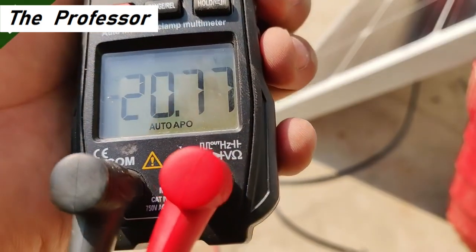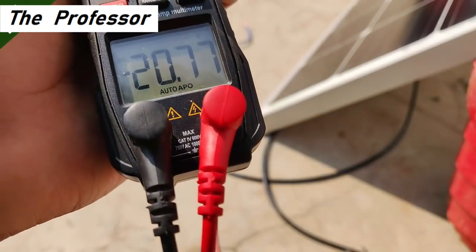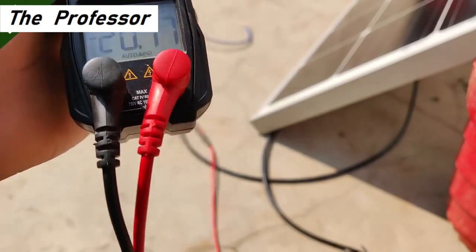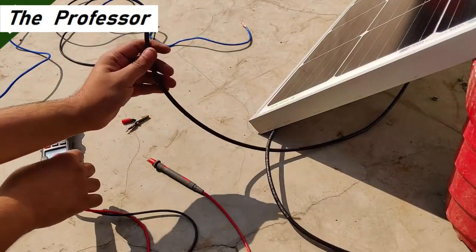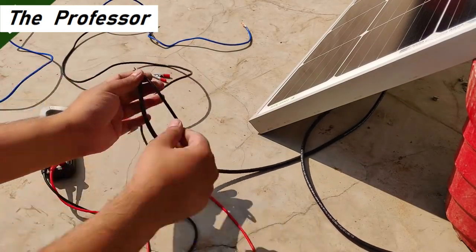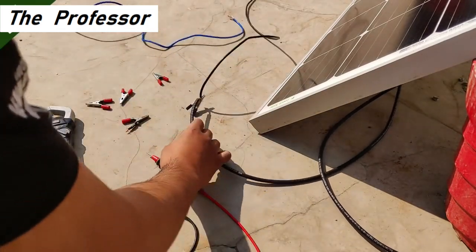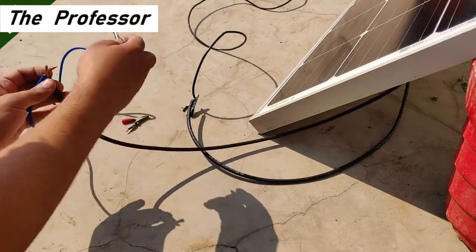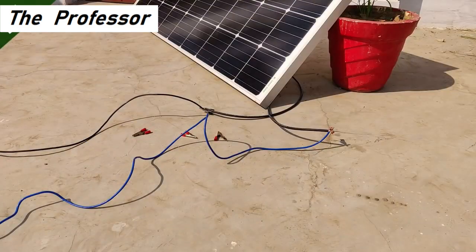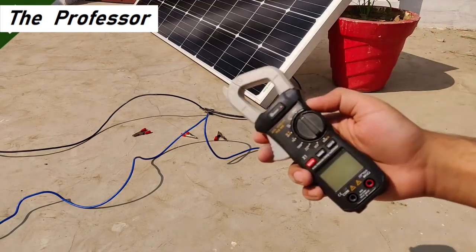The multimeter is showing around 20.78 volts and there's a negative sign which indicates that the polarity is reversed. So this one is negative. Let's connect the black copper wire to the negative and blue to positive. That's done. You have seen the voltage which was 20.83 volts.